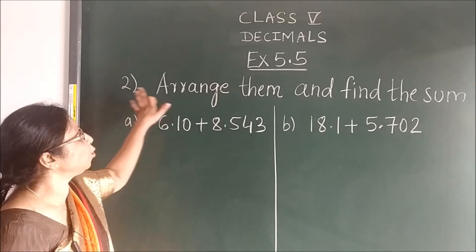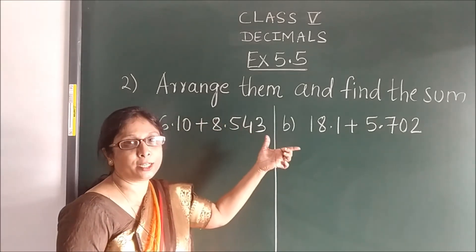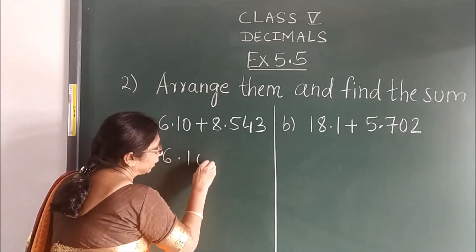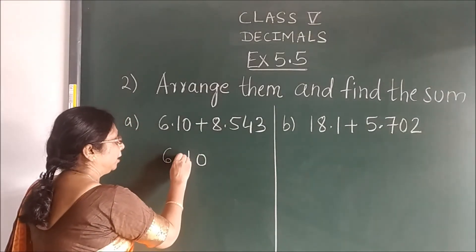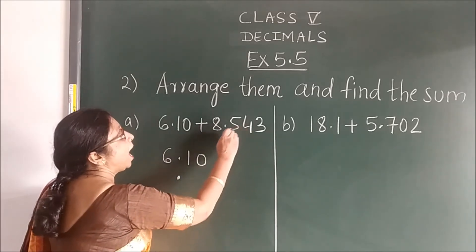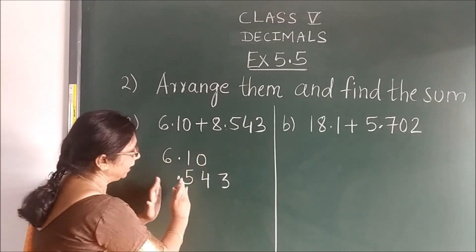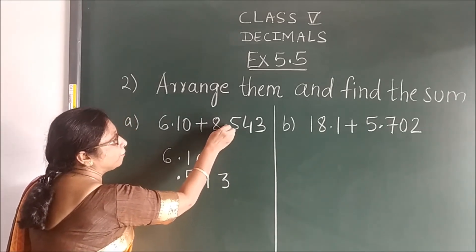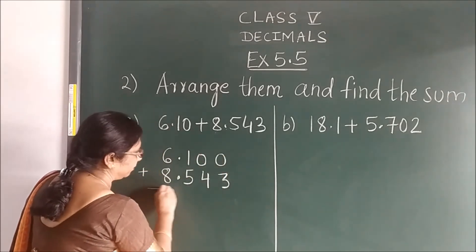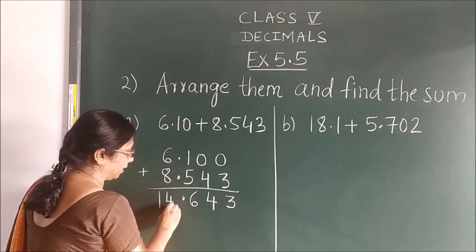Now question number 2: arrange them and find the sum. You have to arrange the numbers given in horizontal way. First, you will write the first number as it is with the point. Below point, just put point. Now see the steps: after point, which numbers are there? 5, then 4, then 3. And before point it is 8, so here write 8. Where nothing is there, add your 0. Then add: 3, 4, 1 plus 5 is 6, and 6 plus 8 is 14.